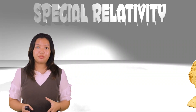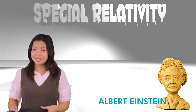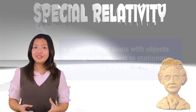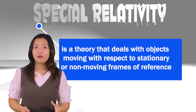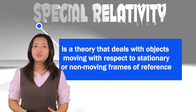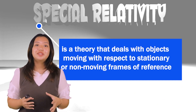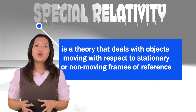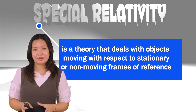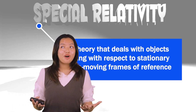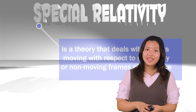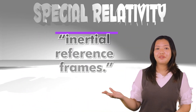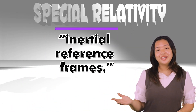Special Relativity, proposed by Albert Einstein, is a theory that deals with objects moving with respect to stationary or non-moving frames of reference, also called inertial reference frames.